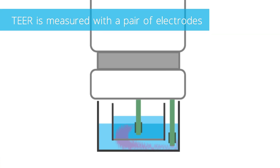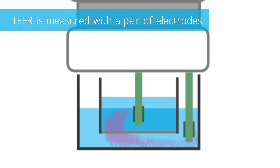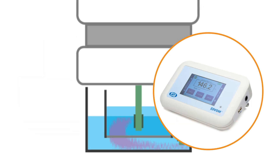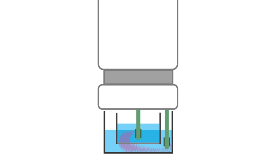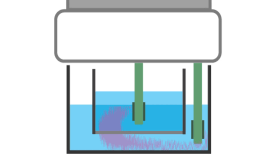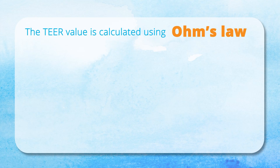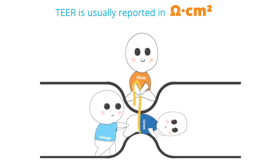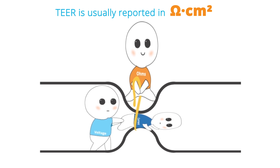TEER is typically measured using a probe with a pair of electrodes placed on either side of the cell monolayer — one in the apical compartment above the cells and one in the basolateral compartment below the cells. An electronic instrument like the EVOM Auto or EVOM Manual applies a small defined voltage across the electrodes and measures the resulting current, from which the resistance is calculated using Ohm's law: R equals V divided by I, where R is resistance, V is voltage, and I is current. TEER is usually reported in units of ohms times square centimeters to account for the area of the cellular monolayer.